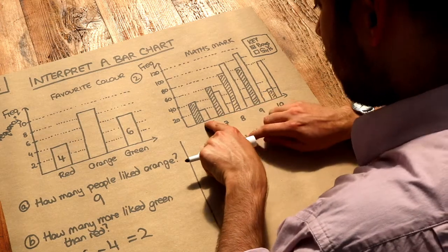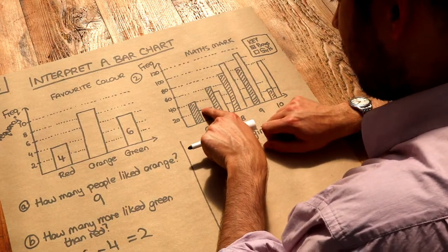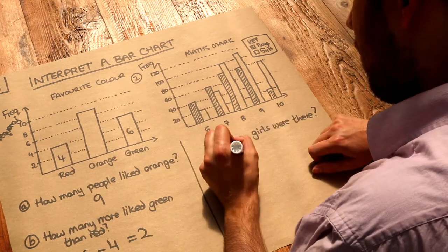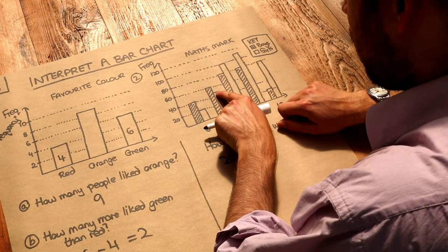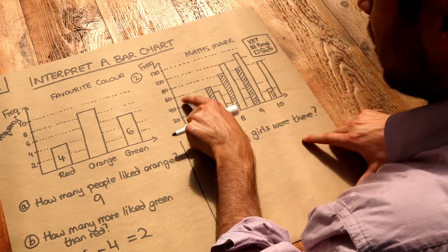Look at this first bar. How many girls have got 6 marks out of 10? If we go to the top of the bar, we can see that's 20. How many girls have got 7 marks? Go to the top of that girl bar and we can see it's halfway between 40 and 60, which is 50.